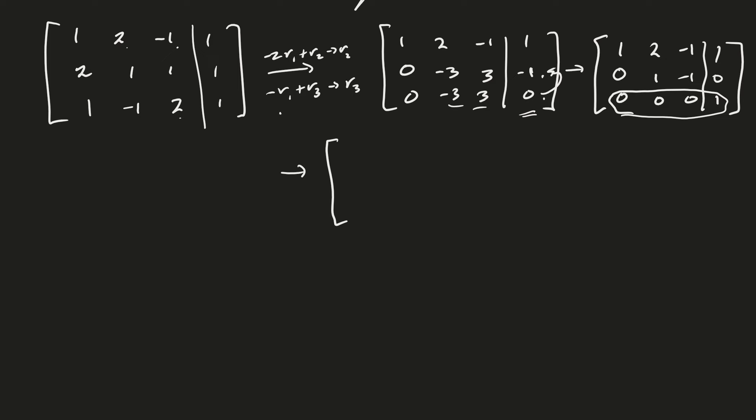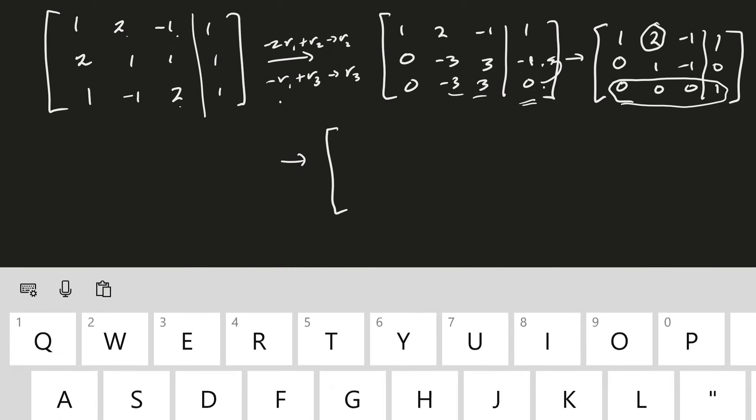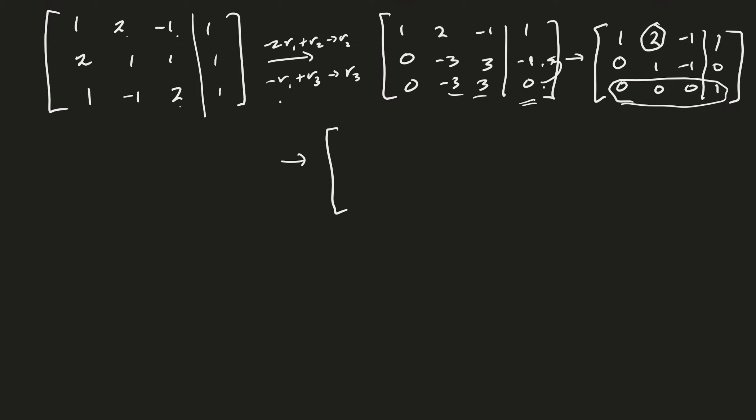So, if I go ahead and finish up by row reduction, I need to get rid of this 2 right here, right? So, that's going to be minus 2, row 2, plus row 1. So, then we have 1, 0, 1, 0, 0, 1, minus 1, 0, 0, 0, 0, 1.